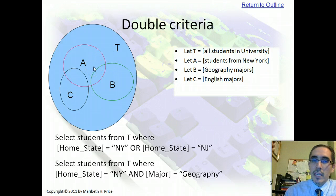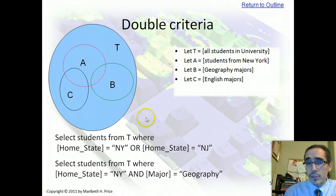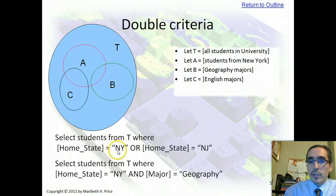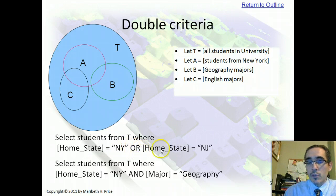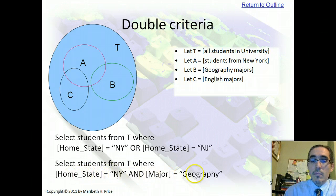Imagine constructing a query like: home state equals New York OR home state equals New Jersey. There's no New Jersey in here, but because it's an OR statement, all the records that correspond to New York — all the students from New York, everything within A — would be selected. For an OR statement to be true, one or both sides can be true; they don't both have to be true. Contrast that with the second SQL statement: home state equals New York.